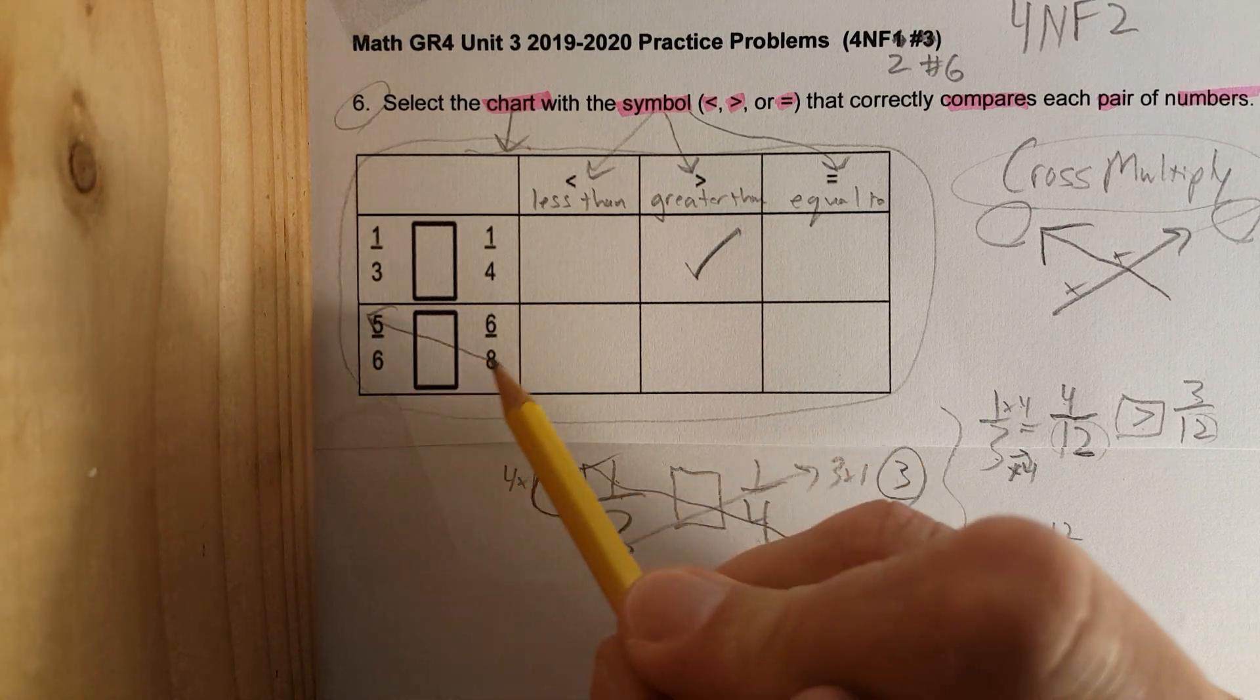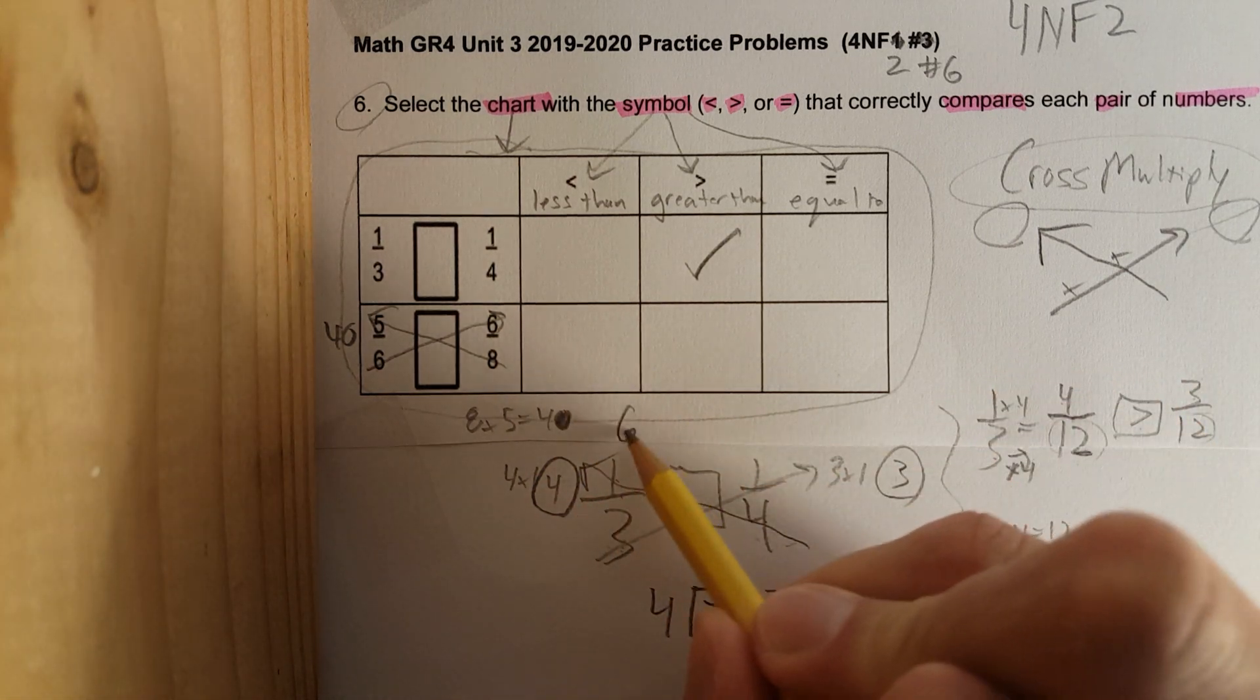Five over six compared to six over eight. If you cross multiply, this is eight times five. Eight times five is forty, so you really need to know your multiplication facts. So I'd write forty over here, and then this would be six times six, which is thirty-six. So you can see that clearly I would have forty compared to thirty-six. I know that forty is greater than thirty-six, so both of these are greater than signs.